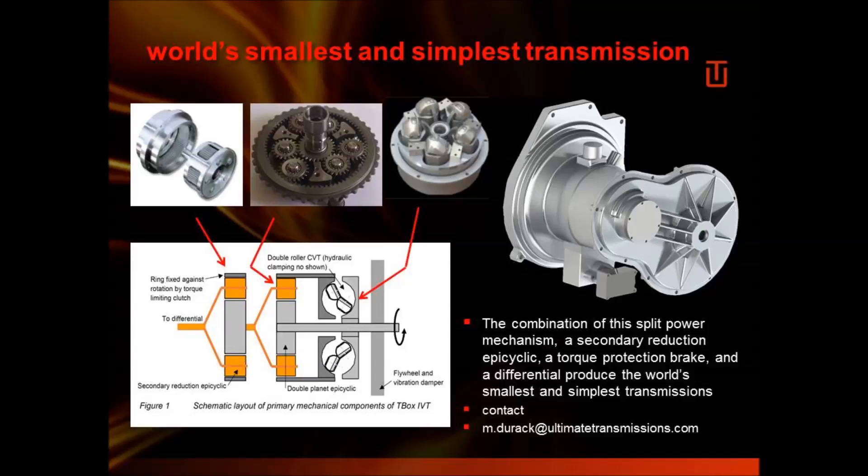This fundamentally very simple single epicyclic power split mechanism is incorporated in the T-box IVT-150 automotive transmission. Combined with the double roller full toroidal variator, or DRFTV, a secondary reduction epicyclic, a torque protection brake, and a differential, it produces the world's smallest and simplest automatic transmission.